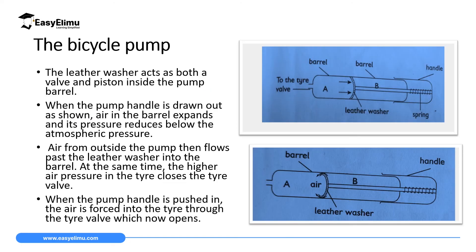This brings us to the second application of pressure: the bicycle pump. A bicycle pump applies the idea of pressure difference in its operation, especially in inflating bicycle tires and even a football. The parts of a bicycle pump include Barrel A and Barrel B. Barrel A is in front of the leather washer, and Barrel B is at the back of the leather washer. Barrel B is always at atmospheric pressure. Then we have a handle, a spring, and a nozzle which connects to the tire valve.